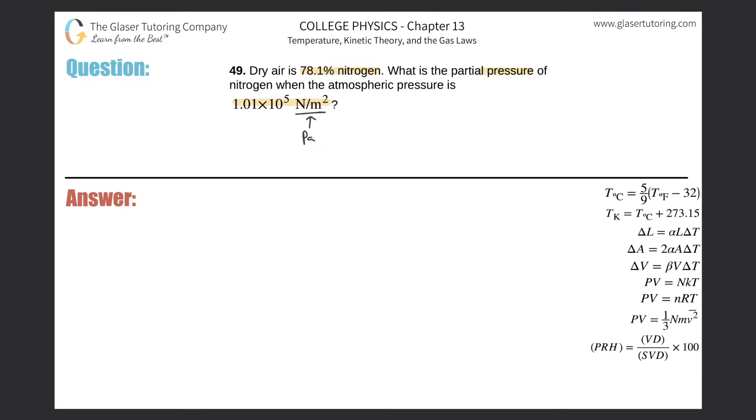Now if we had atmospheric air, pretend that this is a three-dimensional sphere. Inside of the sphere we're going to have about 78.1% nitrogen gas. And nitrogen gas exists as diatomic nitrogen, N2.